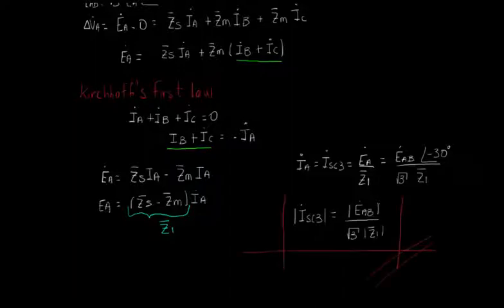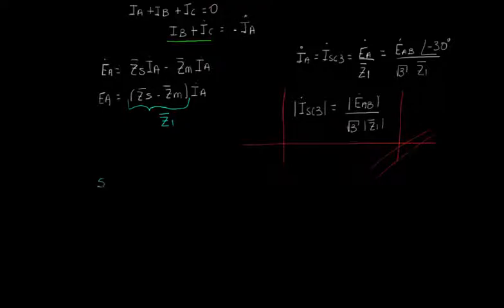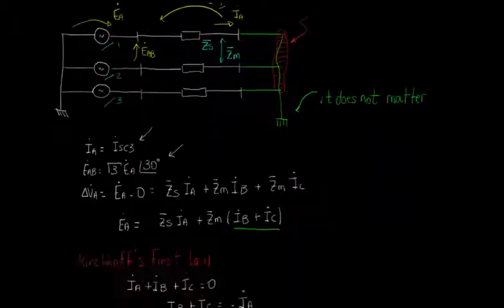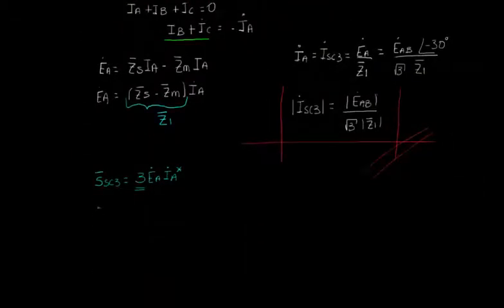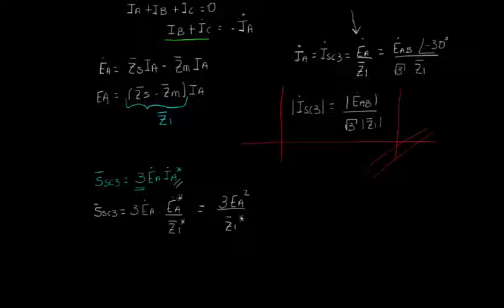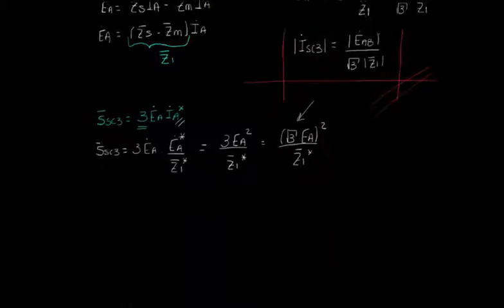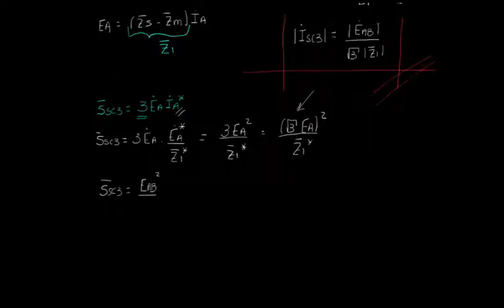SSC3 can be calculated as 3 times EA times the conjugated of IA because we have a three-phase system. We know that IA is equal to EA divided by Z1, so we can apply it here and say that this is equal to 3 times EA squared divided by the conjugated of Z1. And writing EA as function of EAB, we can write that the module of SSC3 is equal to EAB squared divided by the module of Z1.